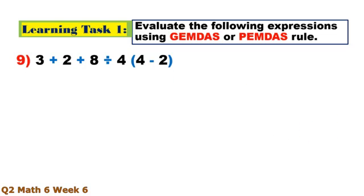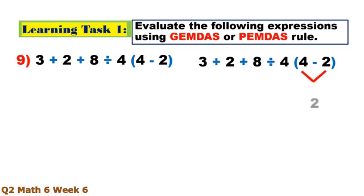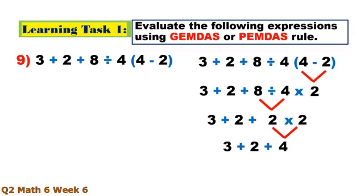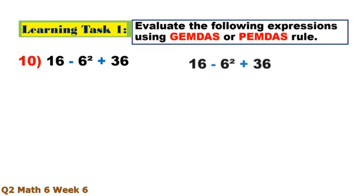Number 9. Parenthesis first: 4 minus 2 equals 2. Then division: 8 divided by 4 equals 2. Then 2 times 2 equals 4, then 3 plus 2 plus 4 equals 9.